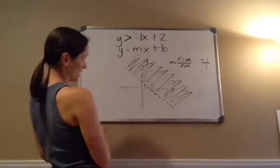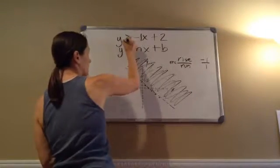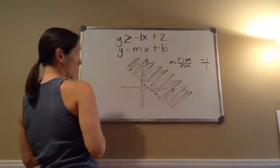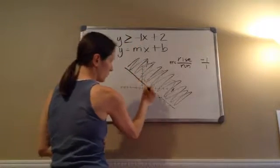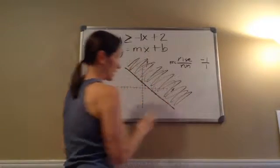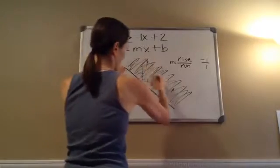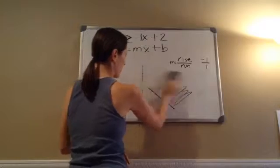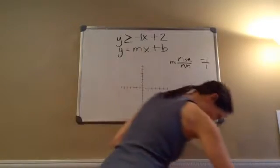Hopefully that makes sense — and it's dotted. Now, if I said 'greater than or equal to,' then it would be a solid line, but this shading would still remain. Okay, that's example 115.1. Let's do a few more.